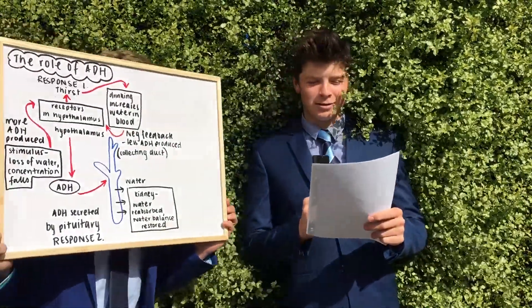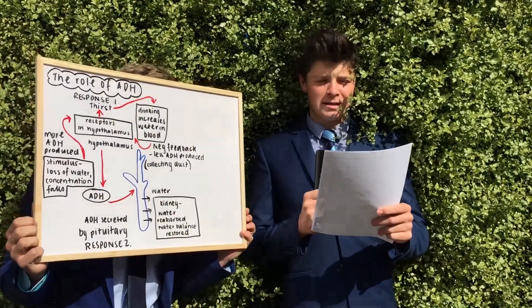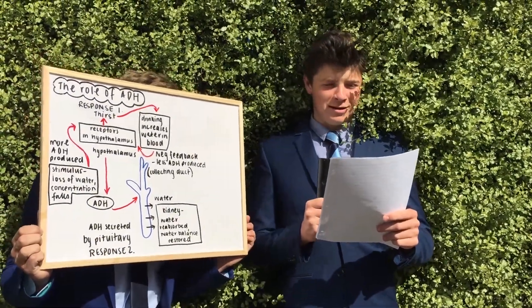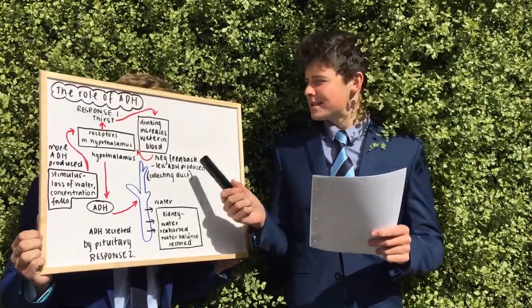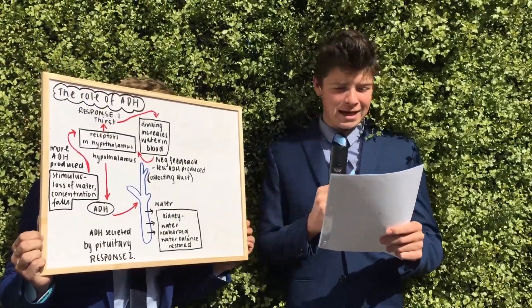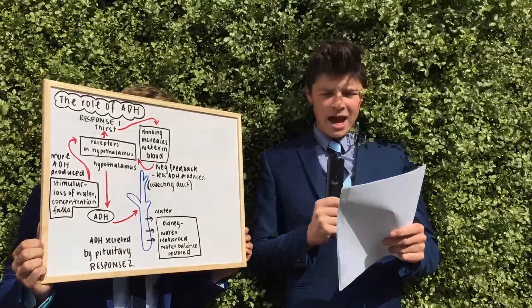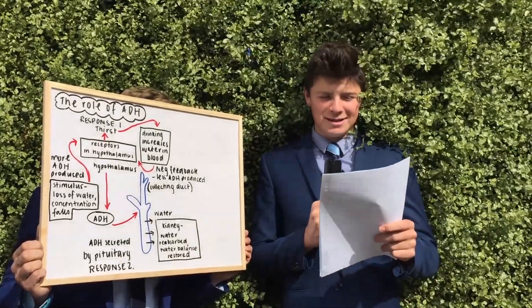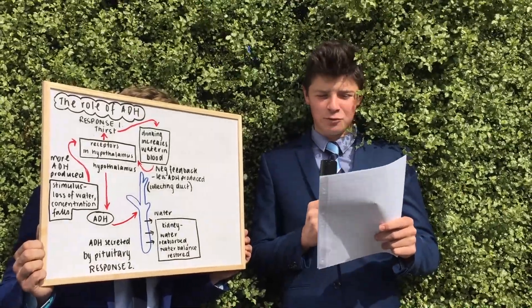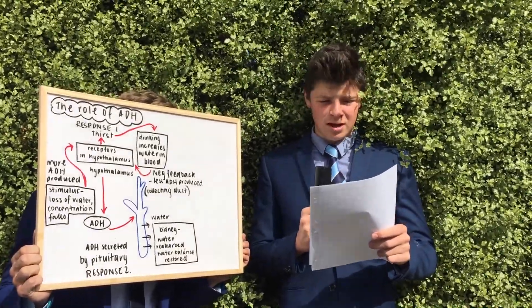Thanks Zach Neffron. ADH constantly regulates and balances the amount of water in your blood. Higher water concentration increases the volume and pressure of your blood. Osmotic sensors work with ADH to maintain water levels. ADH increases the permeability of the walls of the distal tubules.